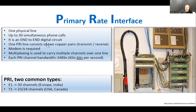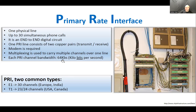One PRI consists of two copper pairs — one transmit, one receive. A modem is required. When we talk about speed, we talk about bits per second; when talking about storage, we talk about bytes. There are two types of common PRI: E1 handles 30 channels, T1 can carry 23 or 24 channels. Each PRI channel bandwidth is 64 kilobits per second.